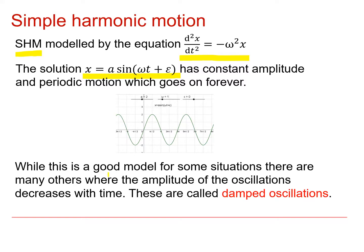While this is a good model for some situations, there are many others where the amplitude of the oscillations decreases with time. Think of a pendulum slowly swinging and gradually the oscillations will dampen down, or indeed a mass hanging on the end of a spring, eventually the amplitude of the oscillations will decrease over time. Those types of oscillations are called damped oscillations.